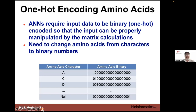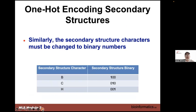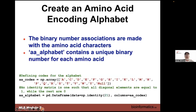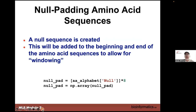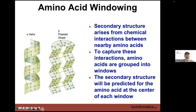The whole point about transforming things — especially with character data — is that we have to do one-hot encoding or embedding. We're converting the letters to binary. We've got 21 amino acids: 20 regular ones and the null amino acid. The encoding for secondary structure uses three sets: 1-0-0, 0-1-0, and 0-0-1 — a three-digit encoding. Here's the alphabet with secondary structure characters and the null padding we have to do for both the beginning and end. Since we're using a window of 17, we need eight nulls at the beginning and eight at the end.